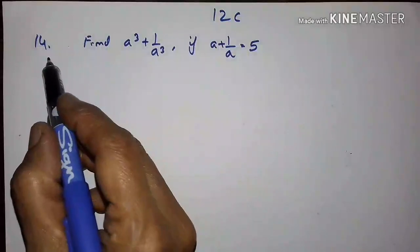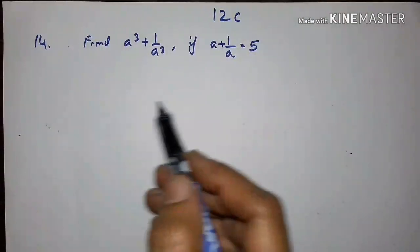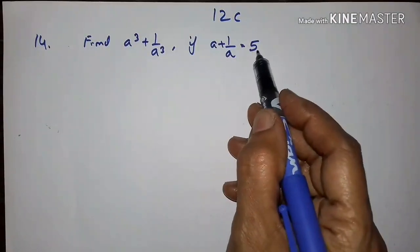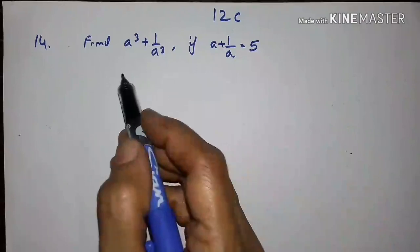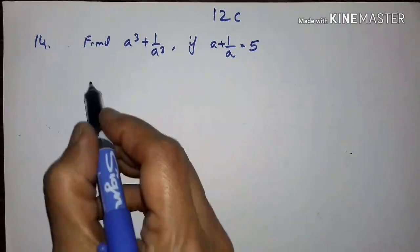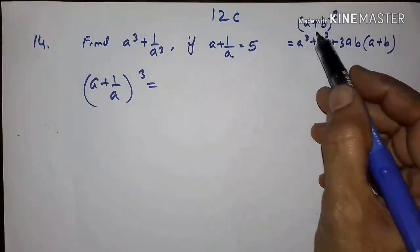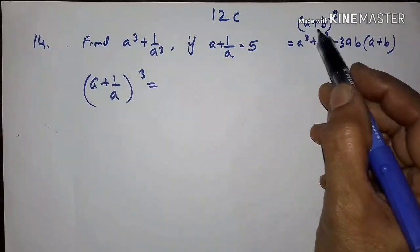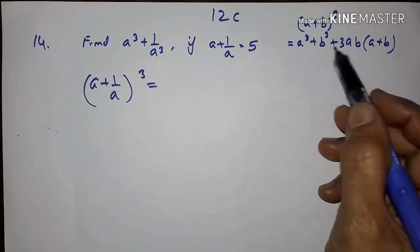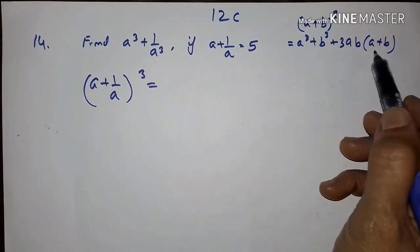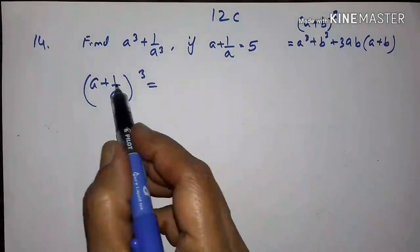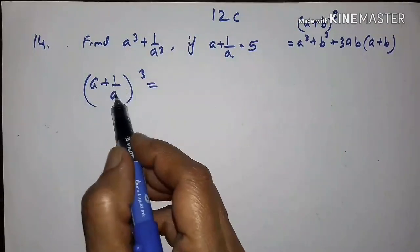Let us go to the 14th problem. Here, a plus 1 upon a is equal to 5. We have to find a cubed plus 1 upon a cubed. We shall use the formula: a plus b, the whole cube, equals a cubed plus b cubed plus 3ab into (a plus b).